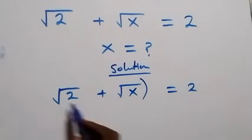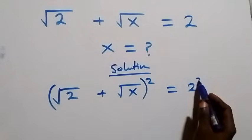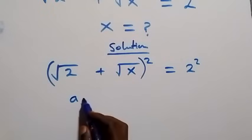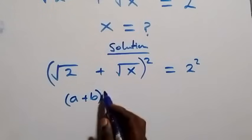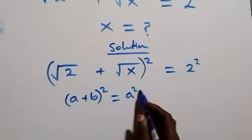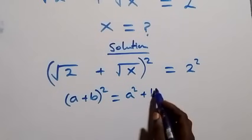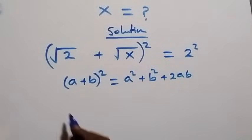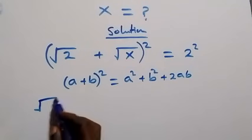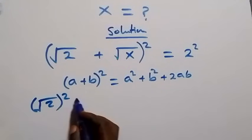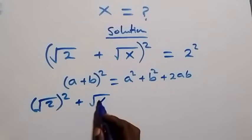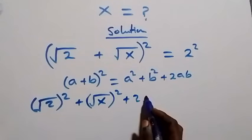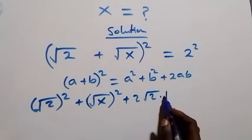We square this side and also we square this side. On this side it follows from the expansion: a plus b, all squared, is the same as a squared plus b squared plus 2ab. That is, here we have root 2 squared, then plus root x squared, then plus 2 times root 2 times root x.